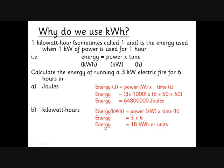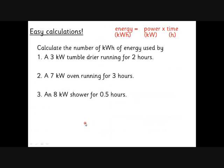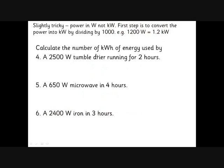You might get on the exams a nice easy calculation where you've got a 3 kW tumble dryer for 2 hours - you already have power in kilowatts and time in hours. Simply 3 × 2 = 6. A 7 kW oven for 3 hours is 21. An 8 kW shower for half an hour is 4. If they give you one of those, be grateful. Don't try to do anything too clever - just make sure power is in kilowatts and time is in hours.